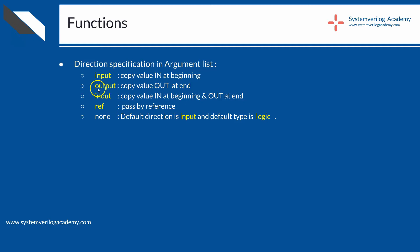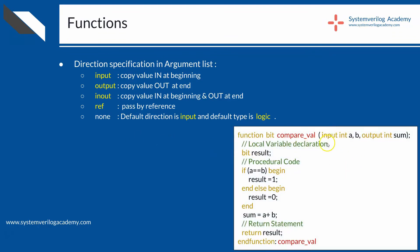In the argument list of the function, you can optionally specify the direction of the formal arguments as any of: input, output, inout, or ref. The direction can be given as shown here, like input int a. If the direction is input, the values of the actual arguments will be copied to the formal arguments at the beginning of the function execution — that is, the values are copied from the calling place at the beginning of execution.